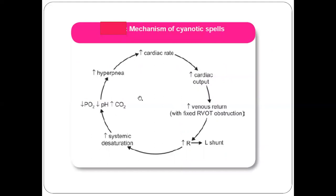The various mechanisms behind cyanotic spells begin with systemic desaturation. First, there must be increased right-to-left shunting. This occurs because of pulmonary stenosis — the right ventricular outflow tract is obstructed, so all the deoxygenated blood of the right ventricle has to go through the VSD (ventricular septal defect) to the left ventricle. This deoxygenated blood mixes with oxygenated blood, leading to systemic desaturation, which causes hypoxia and acidosis with decreased pH.